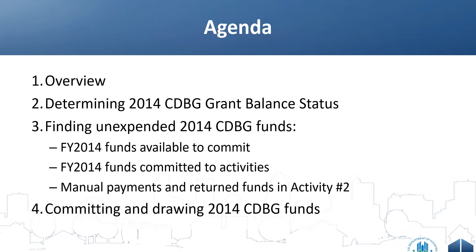Let's talk about the agenda. First, we'll do a brief overview of why you may have 2014 grant balances remaining. We'll cover how to determine your 2014 grant balance status, how to find unexpended 2014 CDBG funds across three pots: FY 2014 funds available to commit, FY 2014 funds committed to activities, and manual payments and return funds in activity number two. Finally, we'll cover developing a spending plan and committing and drawing the 2014 CDBG grant funds by the deadline.